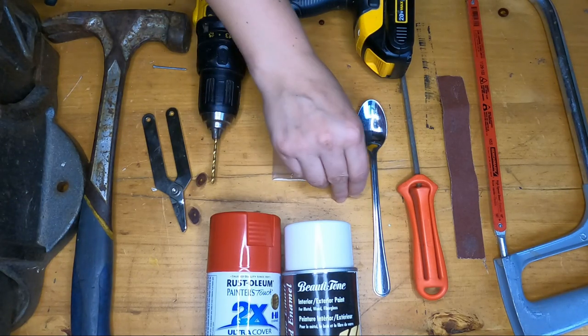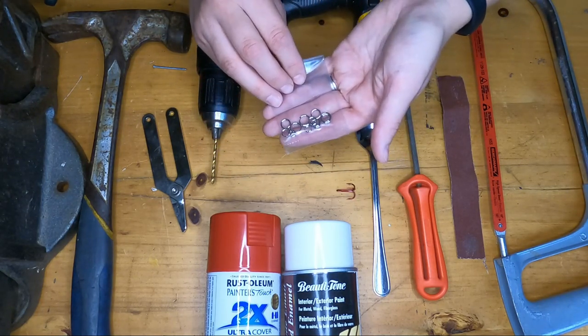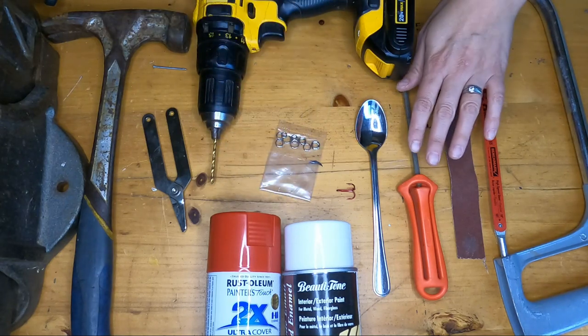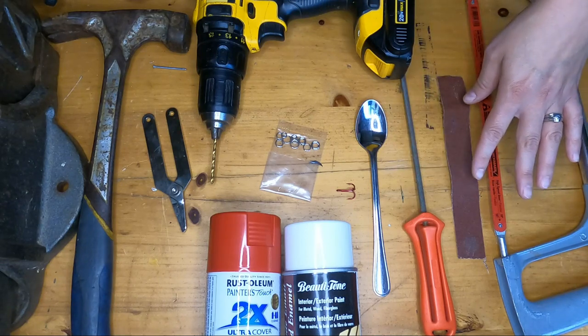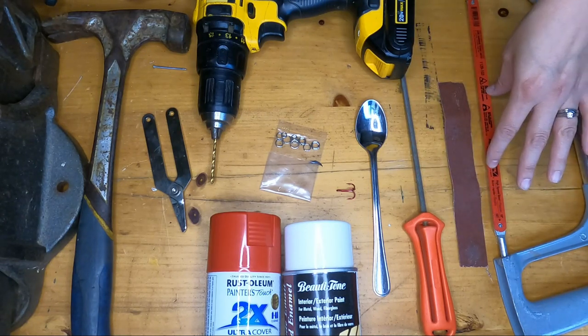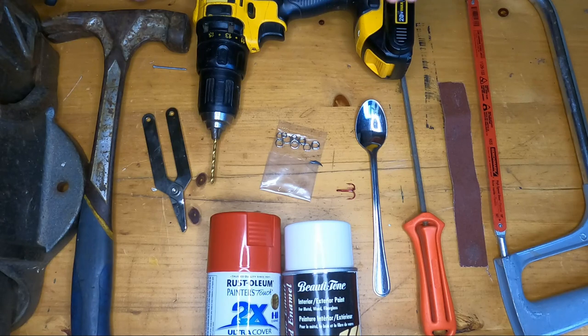You're gonna want to have a treble hook, some split rings, a file—I'd suggest a flat file, I can't find mine today so I just have a circular file—some sandpaper, a hacksaw, a drill.